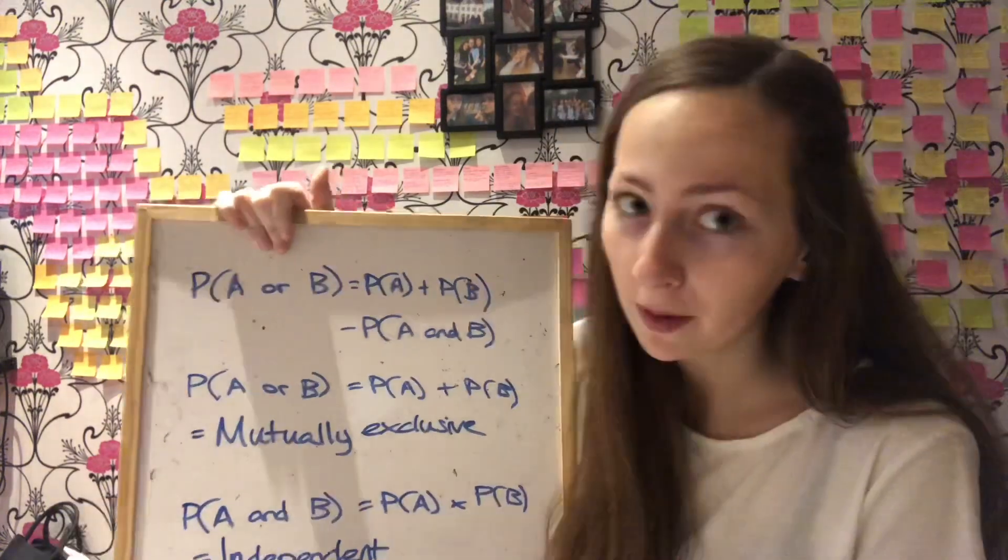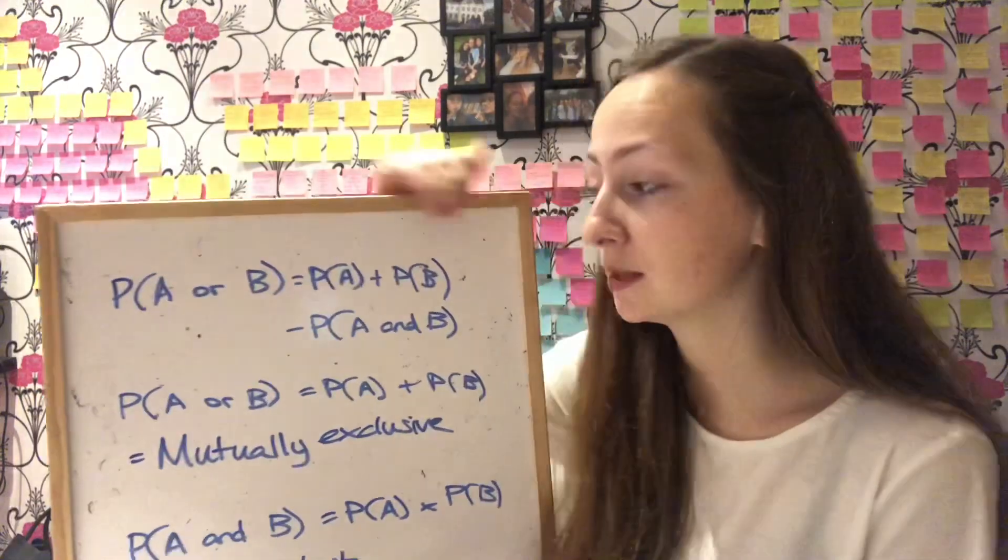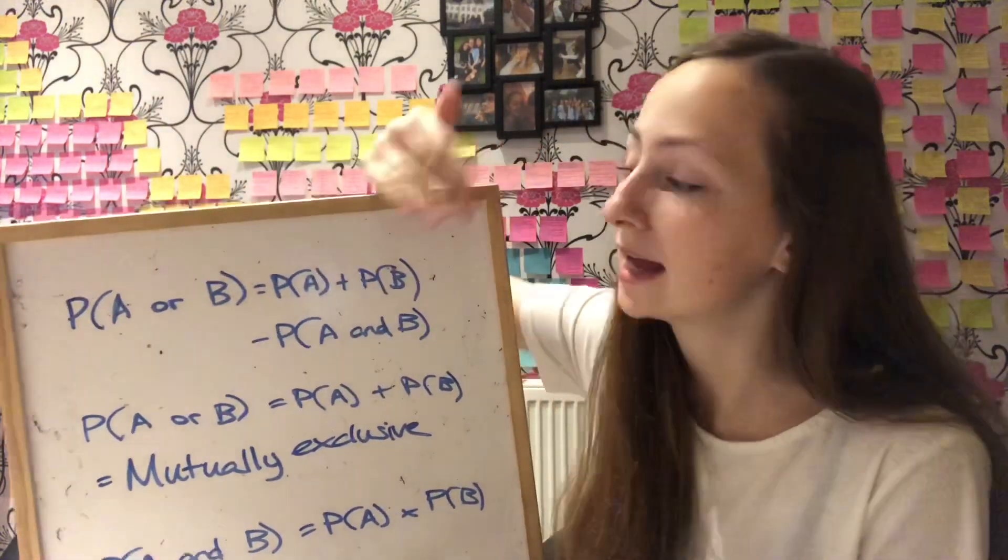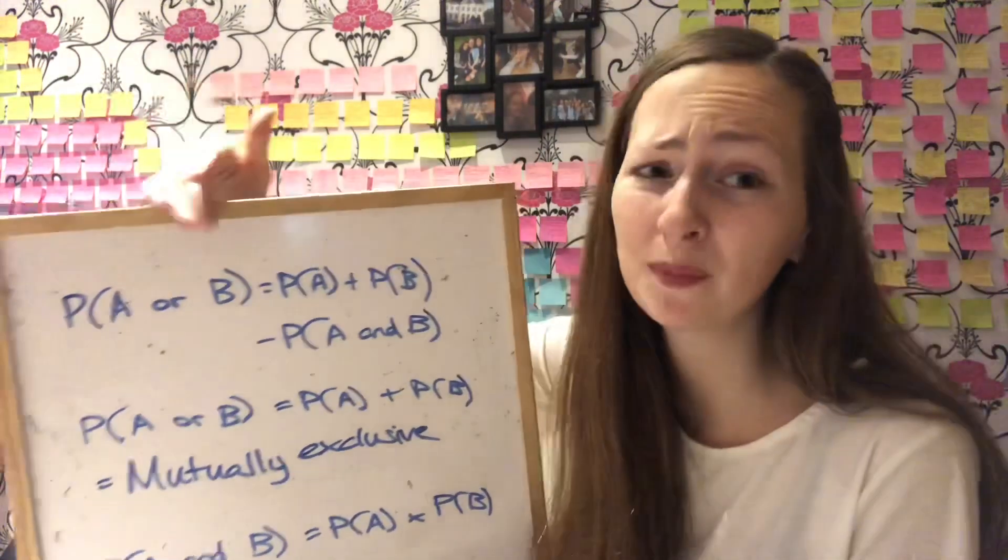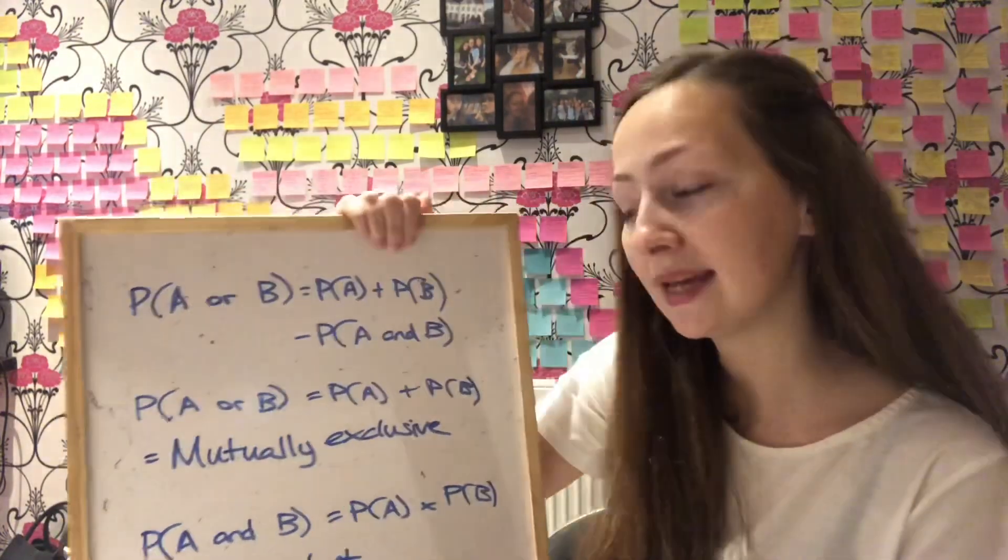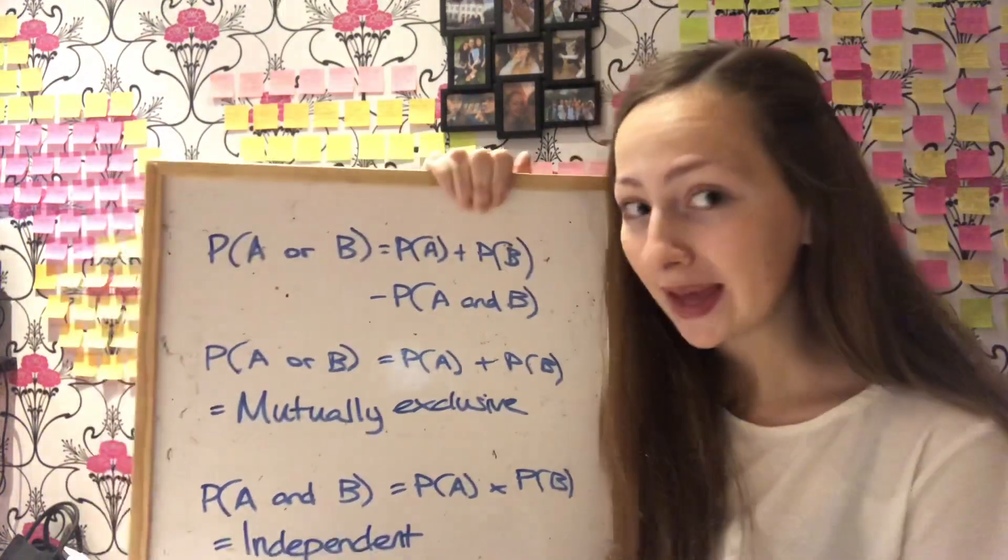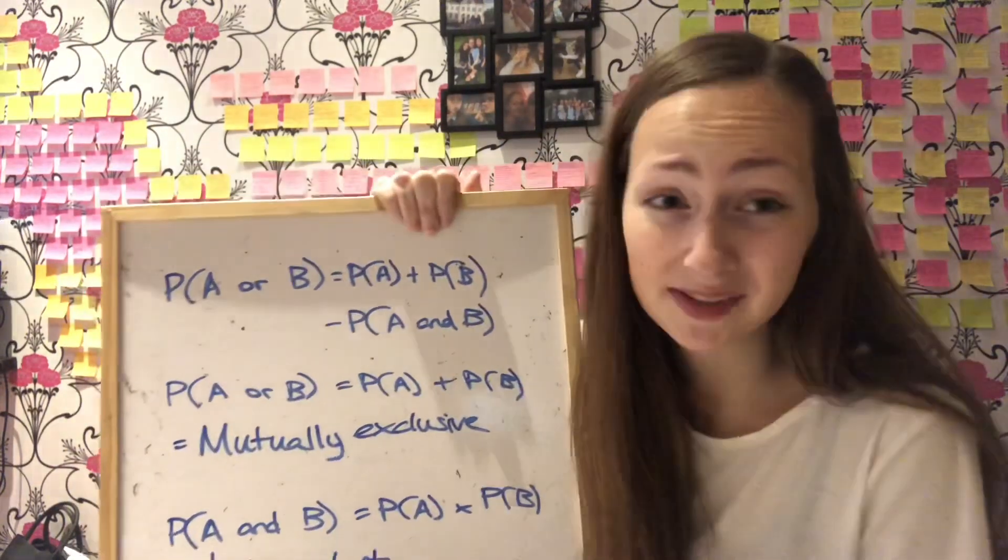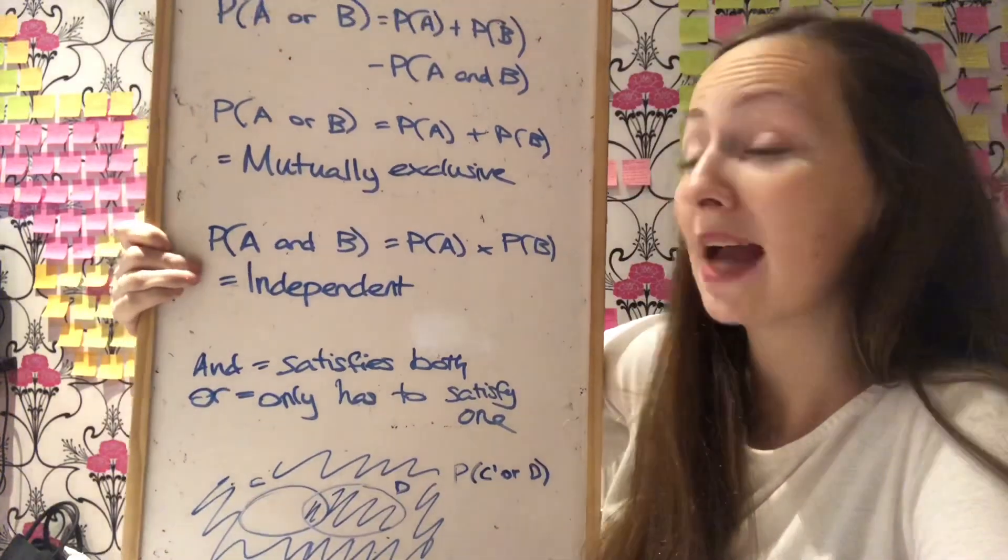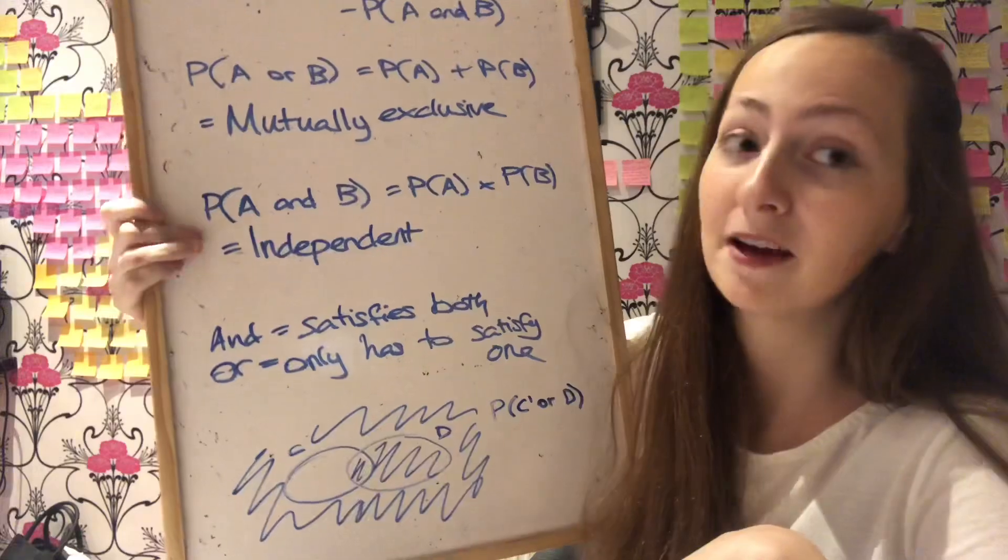One of the first things you learn in year 12 is all about probability and Venn diagrams. So the probability that is either A or B is equal to probability of A plus the probability of B subtract the probability of A and B. And you can mix that up again to rearrange the formula to find something else. If it is mutually exclusive, then the probability of A or B is simply the probability of A plus the probability of B. The probability of it being A and B is zero because they can't happen at the same time. And the probability of A and B for independent events is simply the probability of A multiplied by the probability of B.